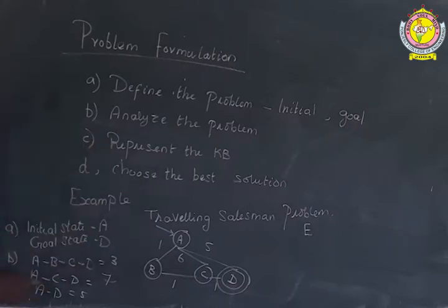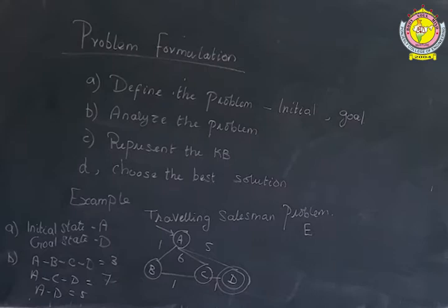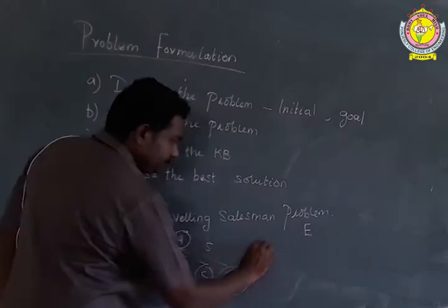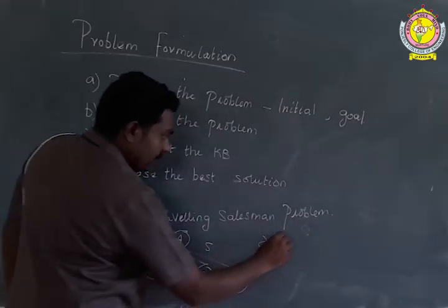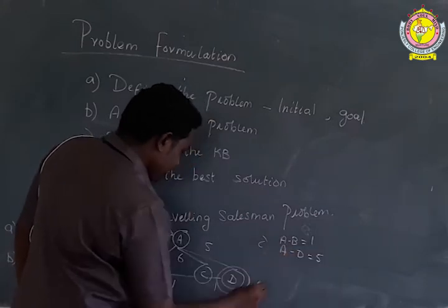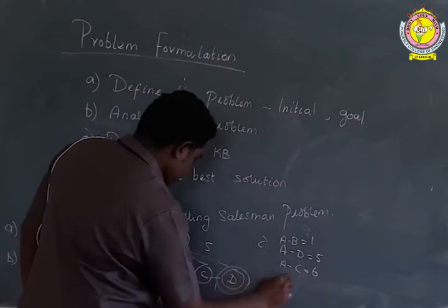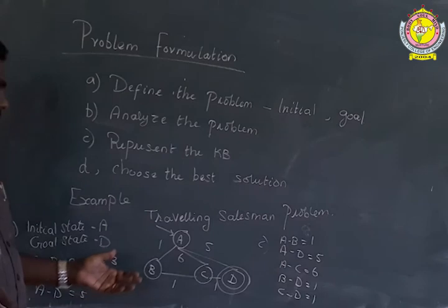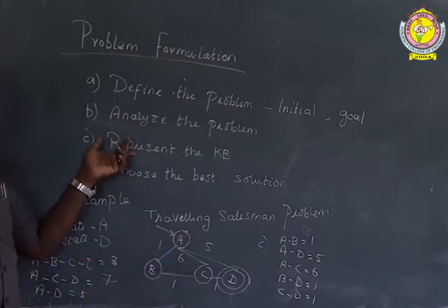The third step is representing the knowledge base. For this traveling salesman problem, we represent the link between each node and the cost for that link. For example: A to B has a path cost of 1, A to D has a path cost of 5, A to C has a path cost of 6, B to D has a path cost of 1, and C to D has a path cost of 1. Representing these states and their costs in the knowledge base is the third step.